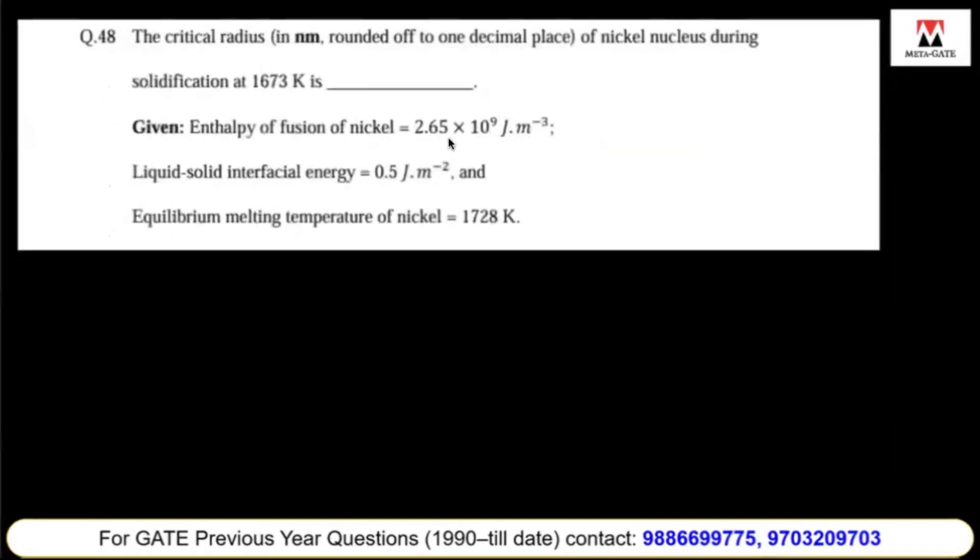The critical radius of nucleus during solidification. Temperature Tm is given as 1673 Kelvin. The enthalpy of fusion of nickel is 2.65 times 10 to the power 9 joules per meter cubed. Liquid-solid interfacial energy gamma equals 0.5, and equilibrium melting temperature is 1728 Kelvin.